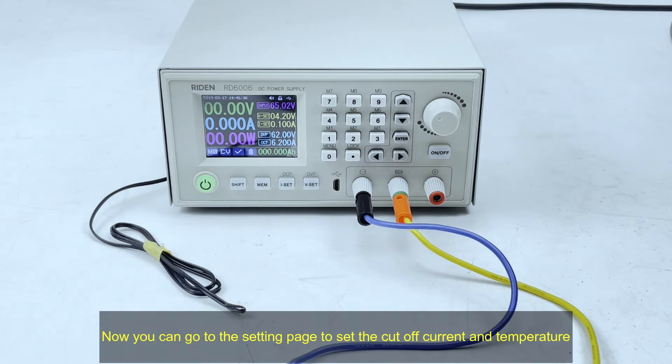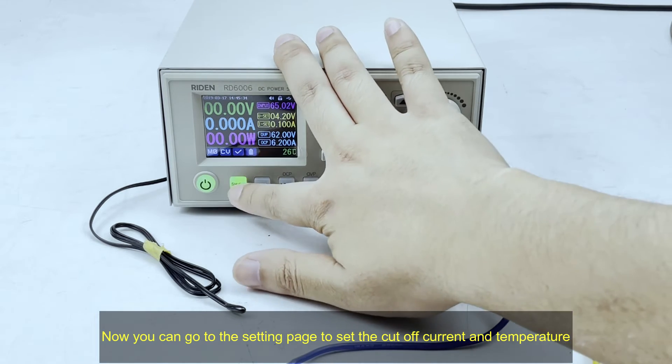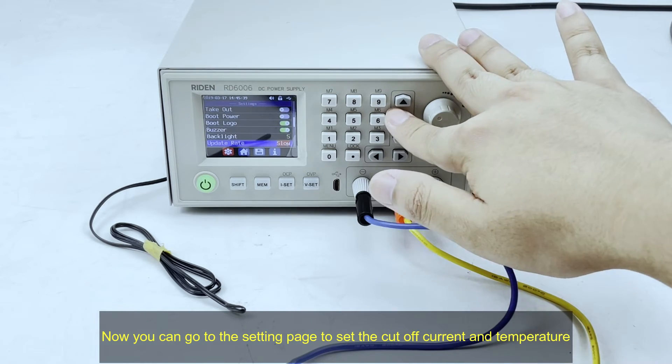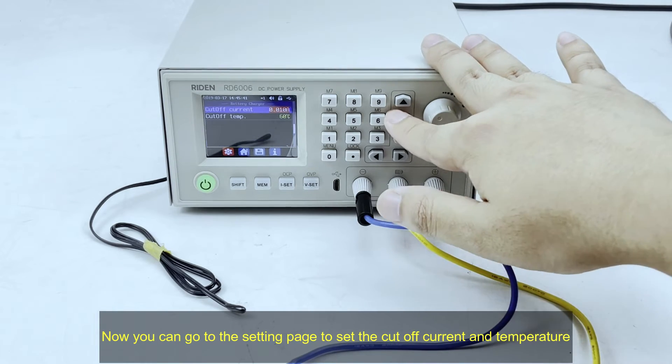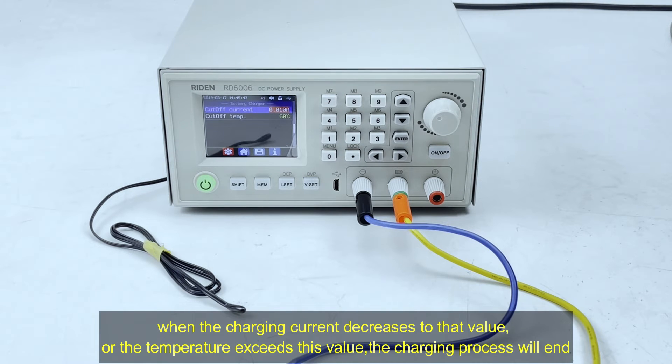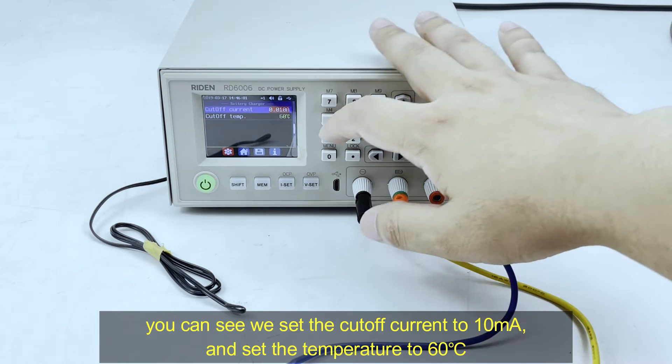Now, you can go to the setting page to set the cutoff current and cutoff temperature. When the charging current decreases to this value or the battery temperature exceeds this value, the charging process will end.